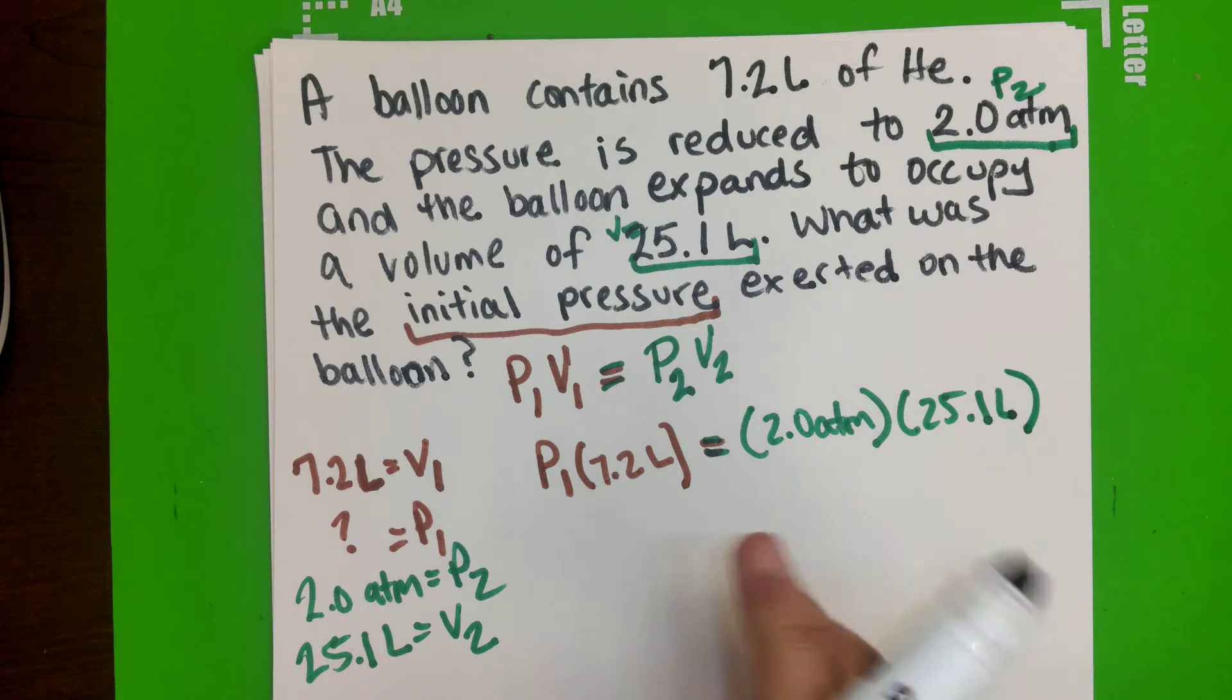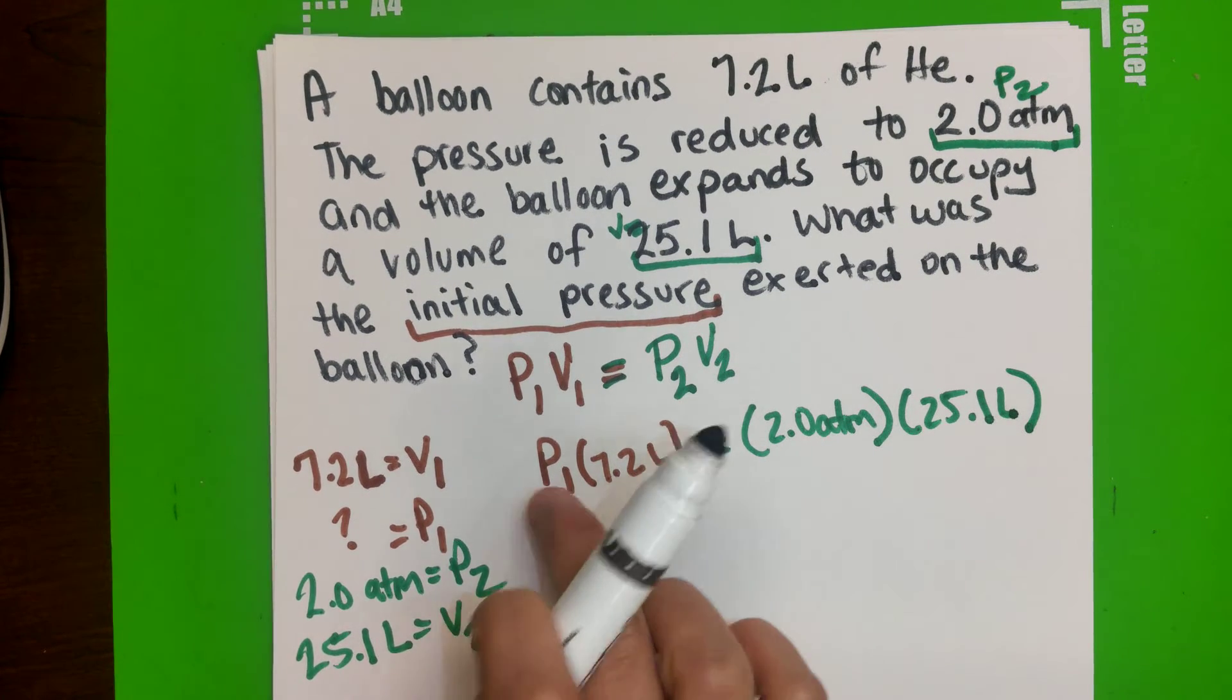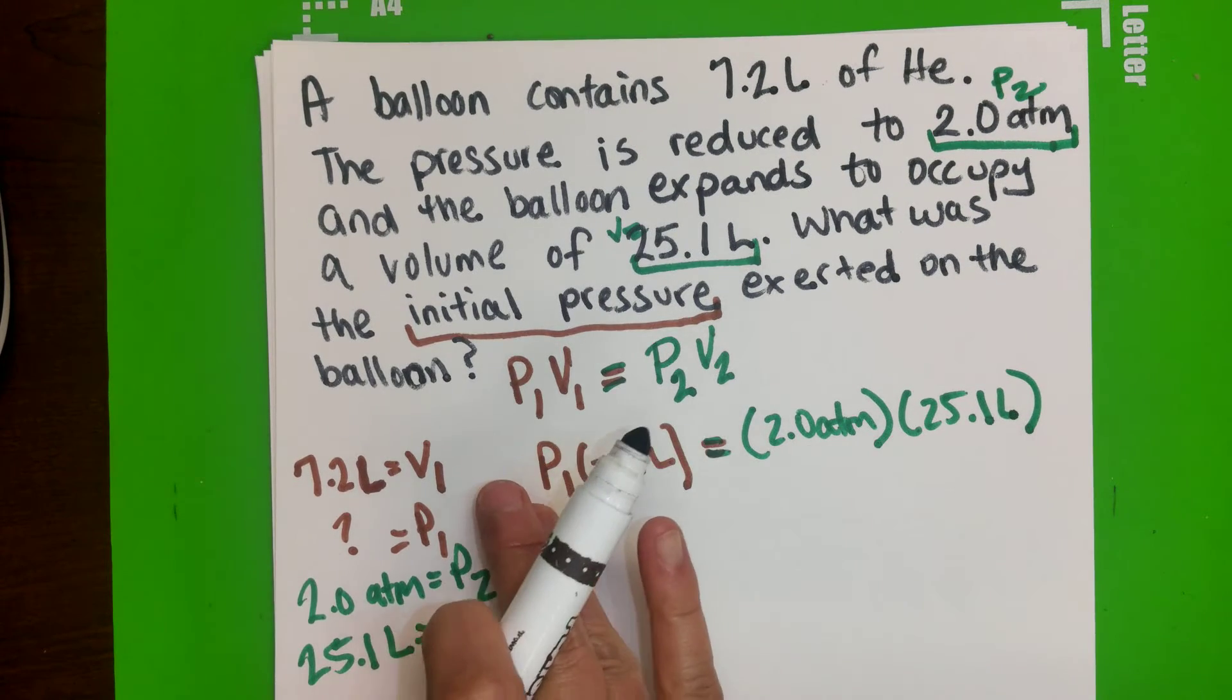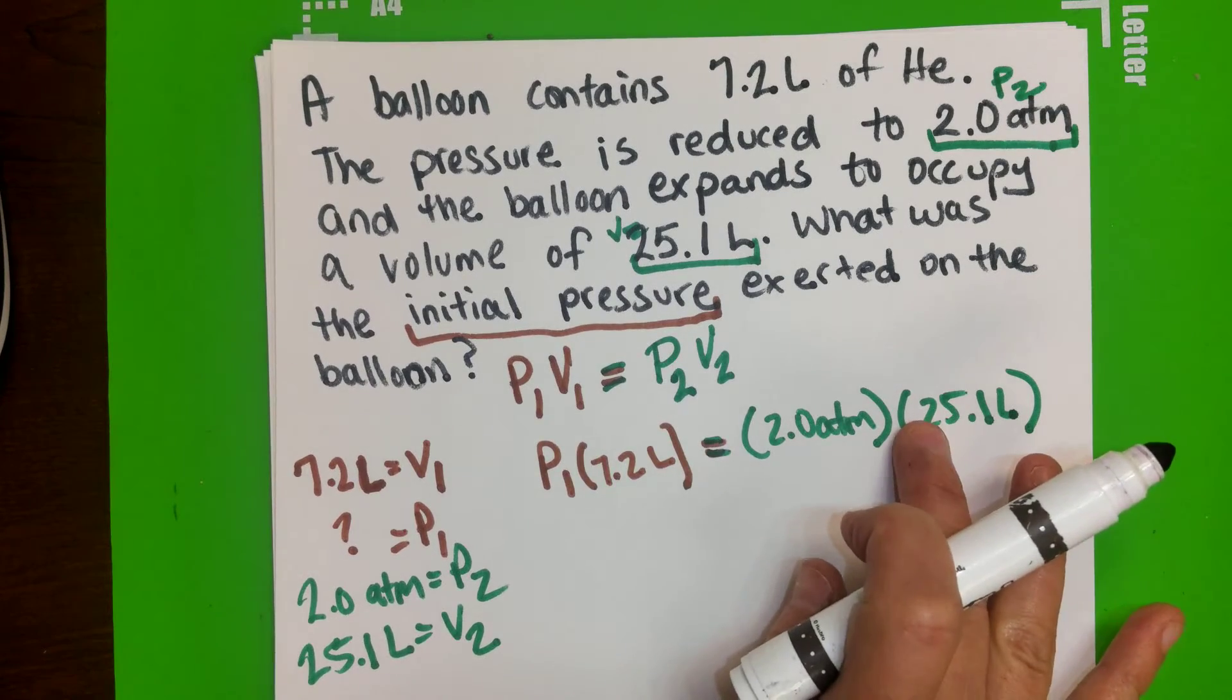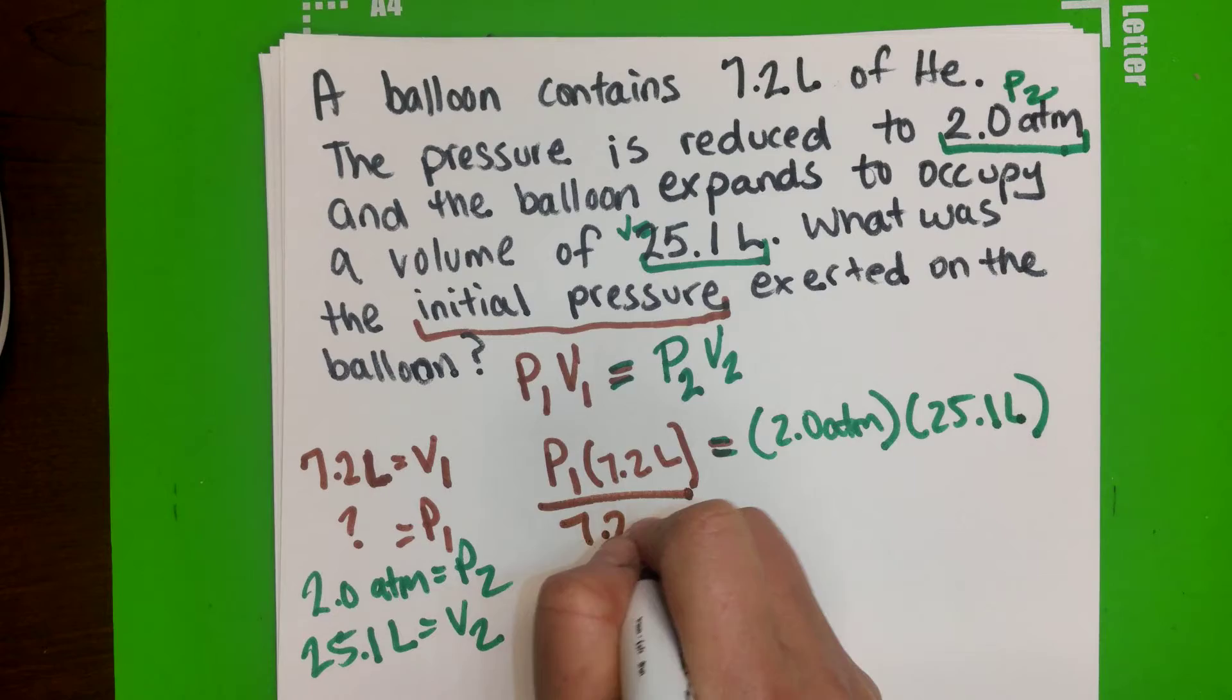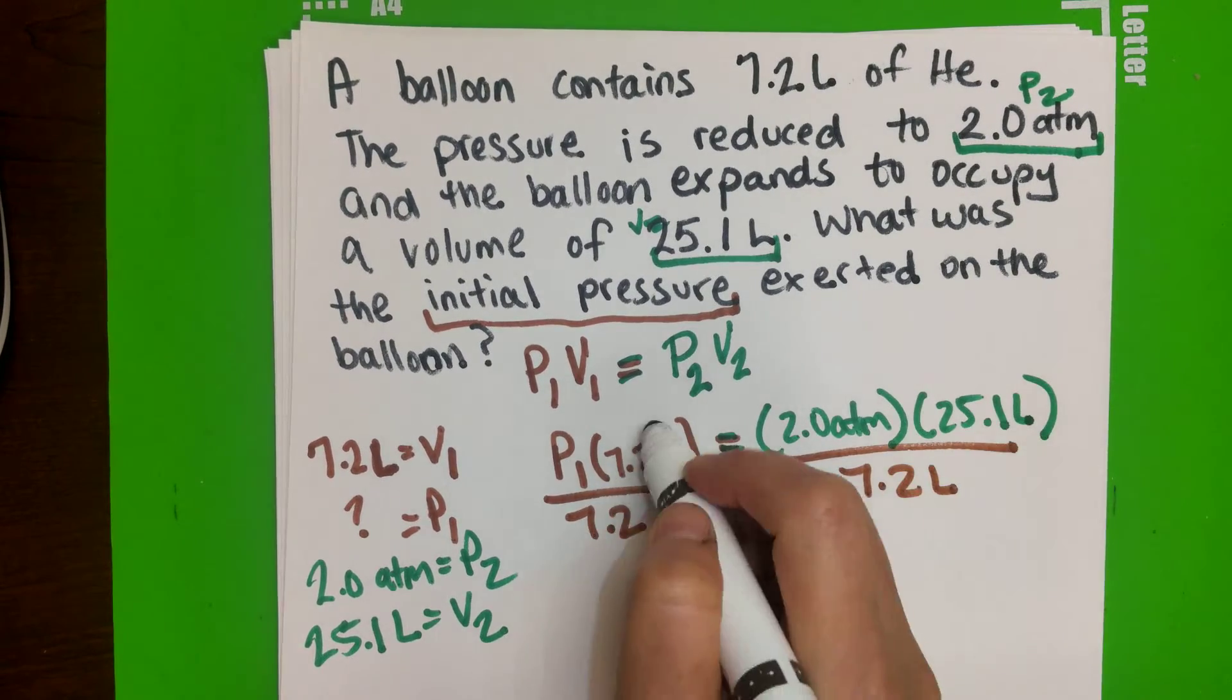So we need to isolate that variable, which is P1, we need to leave it by itself on one side of the equal sign. So this 7.2, we're going to move it on one side, so since it's multiplying, we're going to divide. We do the same thing to the other side, and then we cancel, and we are practically done.